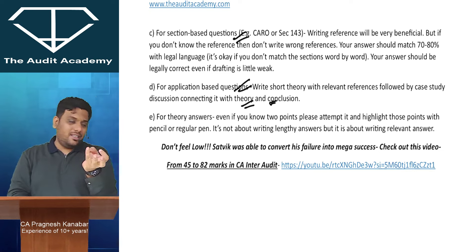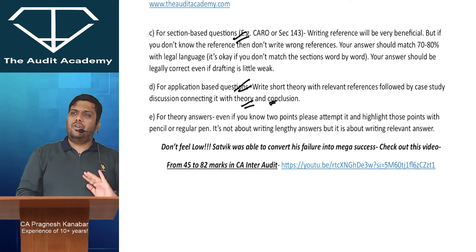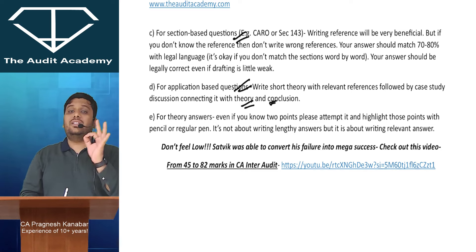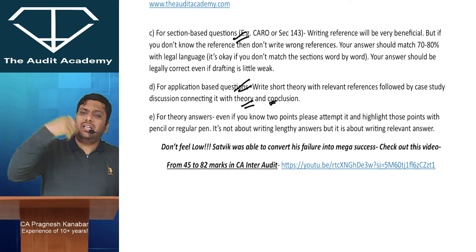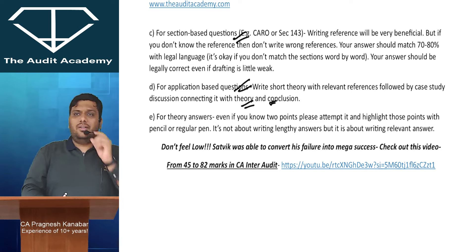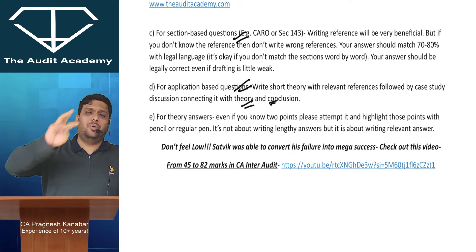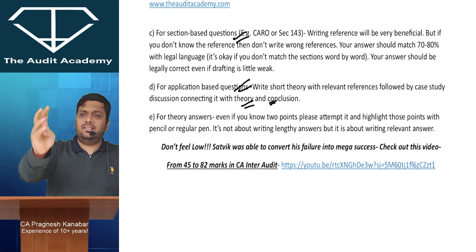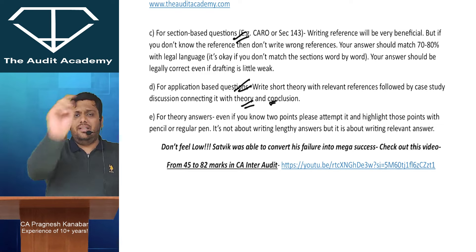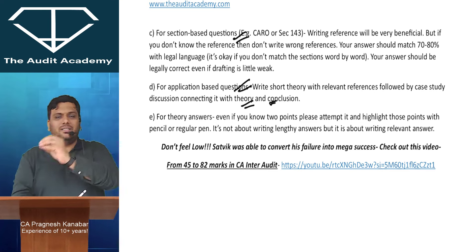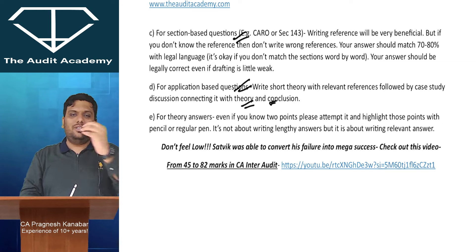For theory answers like factors, give examples because 40-50% of the paper will be application-based and 40-50% theory-based. For theory-based answers, straight away start writing the points - don't write long introductions or irrelevant things. For example, factors to be considered for determining sufficiency of evidence has 3 points: materiality, risk of material misstatement, size and characteristics of the population. Write these 3 points and you get your 3 marks. Questions are of 3-4 marks each, so you just have to get 1, 2, or 3 points correct. Don't stress yourself too much.